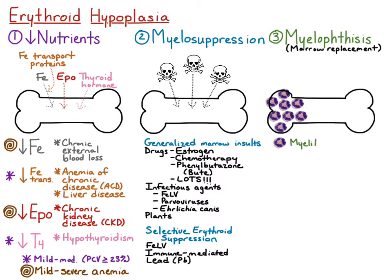One cause of myelophthysis is myelitis, or inflammation of the bone marrow. This most commonly occurs with fungal infections — systemic fungal infections. Later on in December, you'll learn about feline histoplasmosis, a fungal infection that can spread to the bone marrow and cause myelitis.